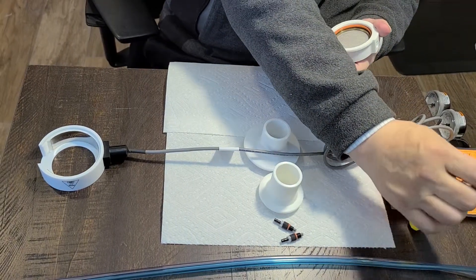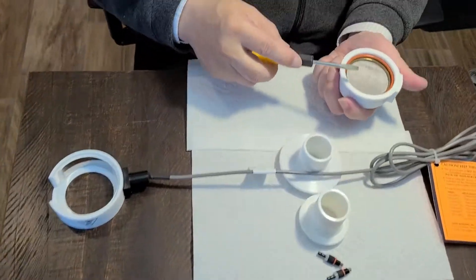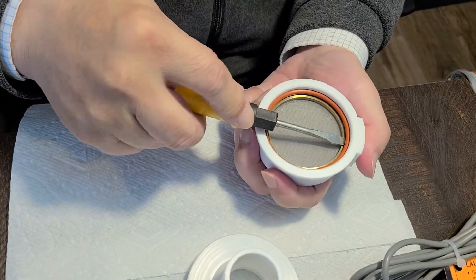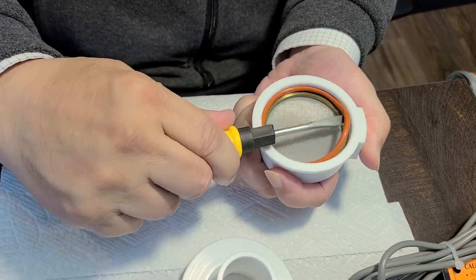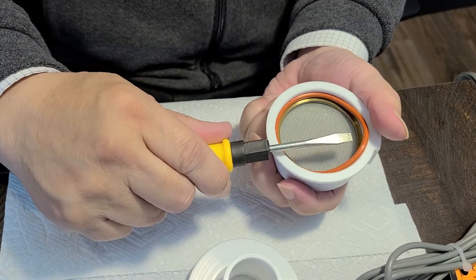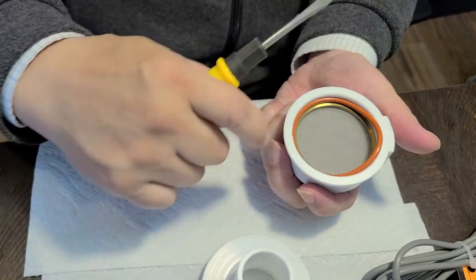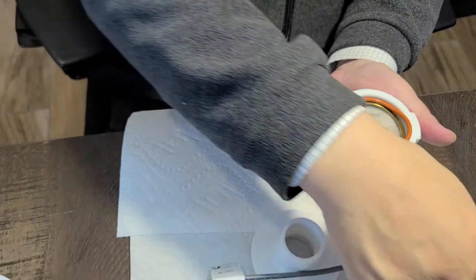Now we use a flathead screwdriver to remove the o-ring from under. Do not use a fingernail because you will hit the screen.